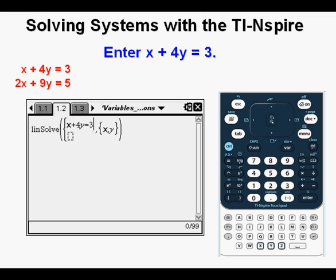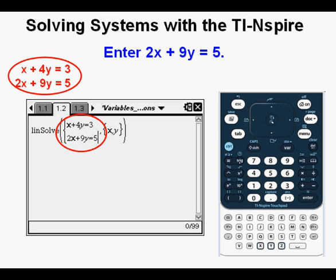Enter the first equation, x plus 4y equals 3, on the top line. Press Tab to get to the next line of equations. Now enter the second equation, 2x plus 9y equals 5. Compare the systems carefully to be certain you entered the equations properly. Press Enter.